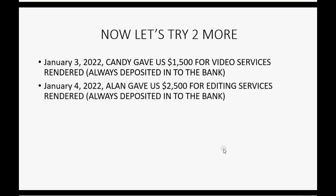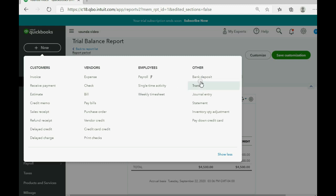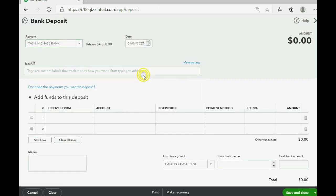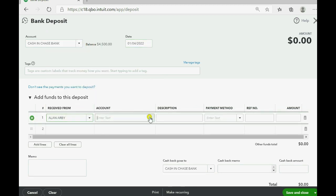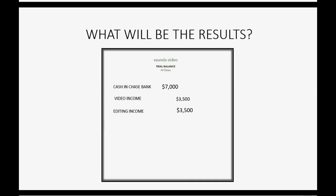Let's do one more. On January 4th, 2022, Alan gave us $2,500 for editing services rendered, again deposited into the bank. Cash in bank increases by $2,500 and becomes $7,000, and editing income increases by $2,500 and becomes $3,500. We click New, Bank Deposit, January 4th, received from Alan Arby, the account was Editing Income, enter the amount, and click Save and Close. The final numbers in the trial balance are exactly as expected.